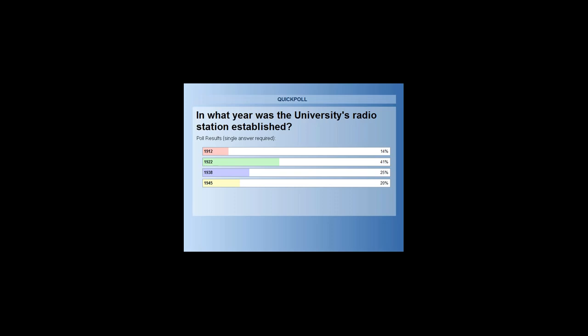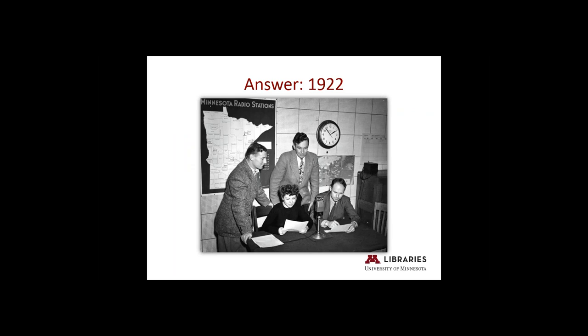41% say 1922, and the answer for establishment is 1922. On January 13, 1922, the university was granted a full license to broadcast under the call letters WLB. Today, WLB — later named KUOM in 1905 — is best known as Radio K, which broadcasts from the Rarig Center on the West Bank on the Twin Cities campus. This makes KUOM the oldest continually operating broadcast station in the state of Minnesota, and the oldest non-commercial educational station in the United States.